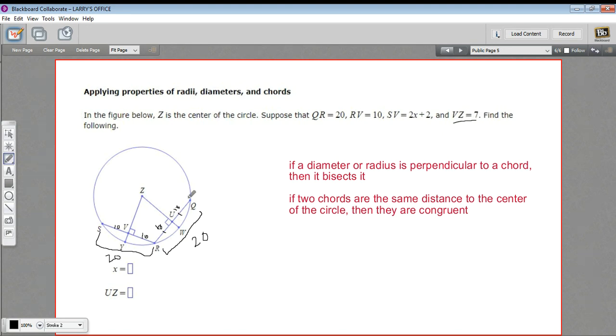And this says VZ equals 7. So this distance here is 7. That means this distance over here has to be 7 as well because the chords are congruent, so they're the same distance from the center. All right, I think that's all the information that we have. Let's see what the questions are.